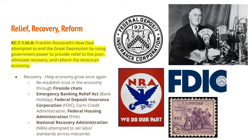Other programs like the Farm Credit Administration and the Federal Housing Administration aimed to get people spending. The Farm Credit Administration gave farmers low-interest loans to keep their farms and buy necessary equipment. The Federal Housing Administration insured mortgages for people's homes — though it adopted discriminatory policies contributing to a growing wealth gap between Black and white Americans. Finally, the National Recovery Administration attempted to set labor standards across industries — minimum wages, working hours, and industry standards — but was eventually declared unconstitutional by the Supreme Court for intervening too much in the economy.